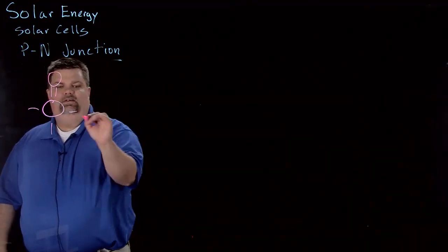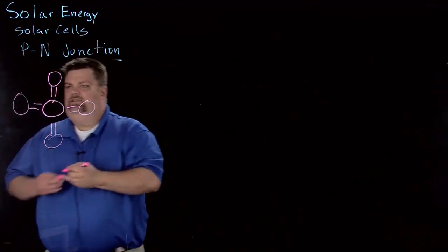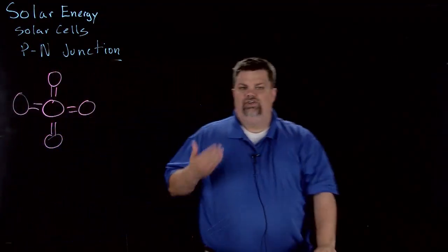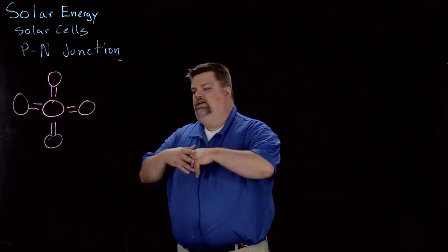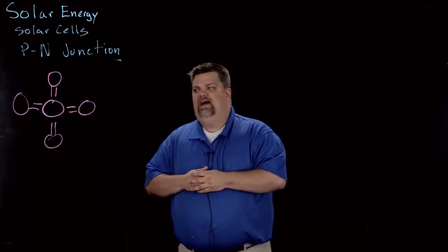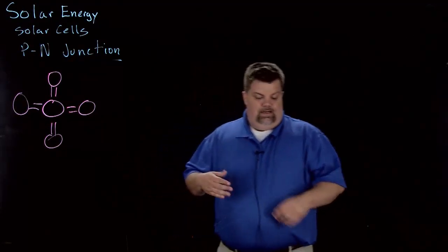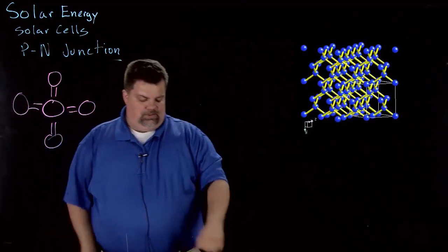What happens is silicon actually is going to form bonds with other silicon atoms and create these bonds. They end up with eight electrons in their outer energy shell. This just goes on and on, and that's the crystalline structure.